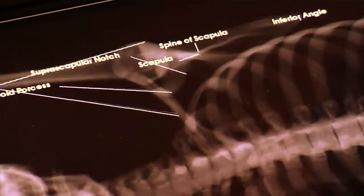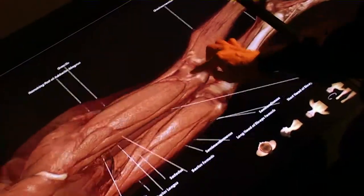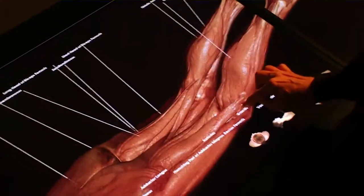Seen here are the bony landmarks of the shoulder. By adjusting the visualization, we can see the muscles and learn to identify them as well.